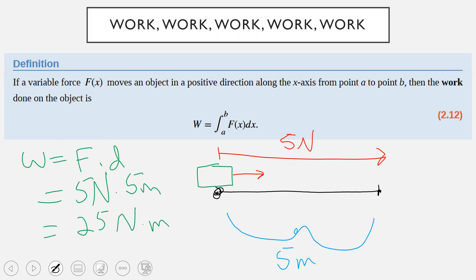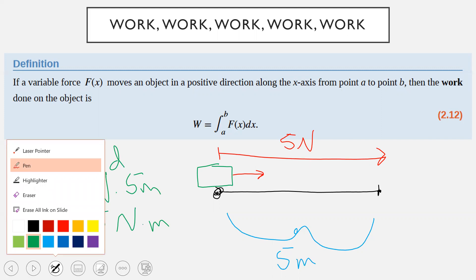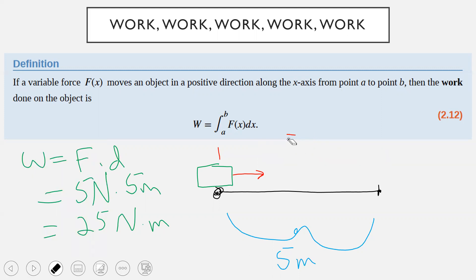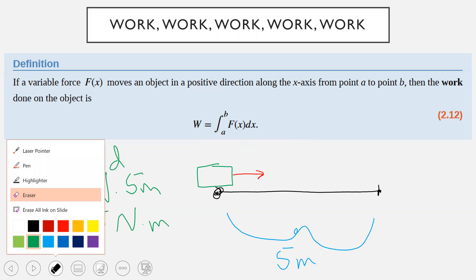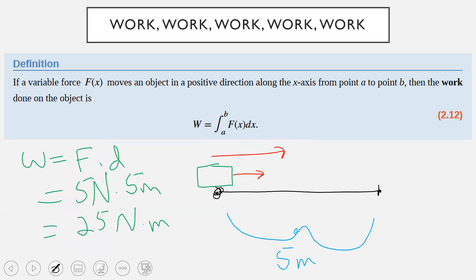But often the force that we're exerting over a distance is not a constant force. And so what might happen as we're pushing this box across the room is that maybe we start off with a strong force of like, say, five Newtons, then we start to get tired as we're going along. So maybe then for a couple of meters we're doing three Newtons, we're getting even more tired as we go across, and then maybe it's two Newtons.